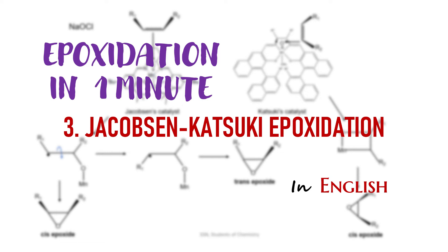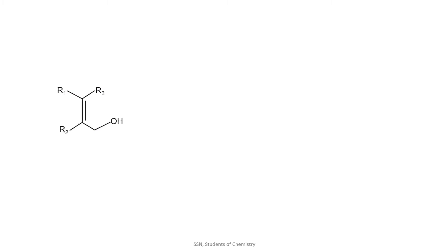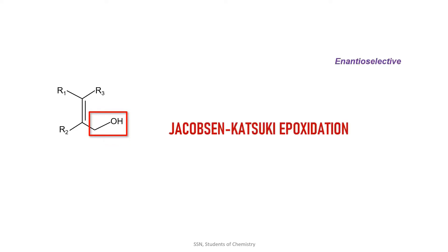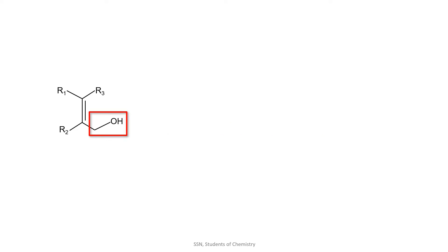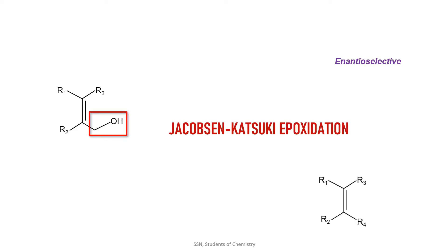Hi guys. Even though the allylic alcohols are very much useful in organic synthesis, the allylic alcohols limit the type of alkene we must choose for the Sharpless asymmetric epoxidation. Here comes another enantioselective epoxidation: the Jacobson-Katsuki epoxidation. It partially solves the problem of choosing the alkene, and it can work with a wide variety of unfunctionalized alkenes.